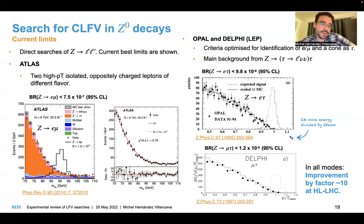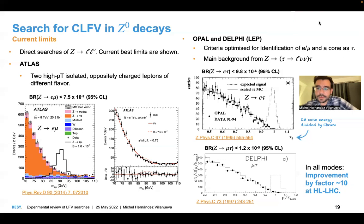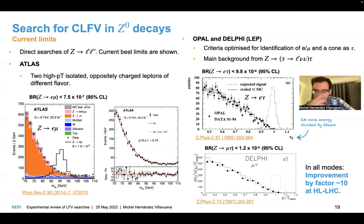For Z to electron-tau or Z to muon-tau, it's harder because you have to reconstruct the tau candidate. Interestingly, the strongest limits for these are still from LEP experiments — both Opal and Delphi. For Z to electron-tau, Opal has the highest limit, and for Z to muon-tau, Delphi performs a similar search, with no excess observed in either case. We expect improvements of a factor of 10 at high-luminosity LHC, so there will be much stronger limits in the coming years. This complements all the searches described previously.